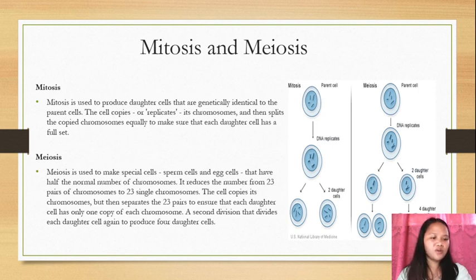Then, the cell copies its chromosomes but then separates the 23 pairs to ensure that each daughter cell has only one copy of each chromosome. A second division then divides each daughter cell again to produce four daughter cells.